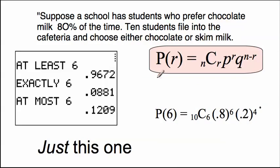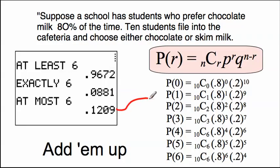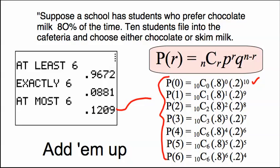Next, exactly six — this number comes from a single calculation. It's the smallest and simplest one to do. You can do it manually, but this does it for you. At most six is probably the most tedious one. It adds up probabilities of exactly zero, one, and all the way up to six. A lot of times students forget to add the probability of P(0), which is not zero — it's the probability of exactly nobody choosing chocolate milk. These all get added up and we get about a 12% probability.